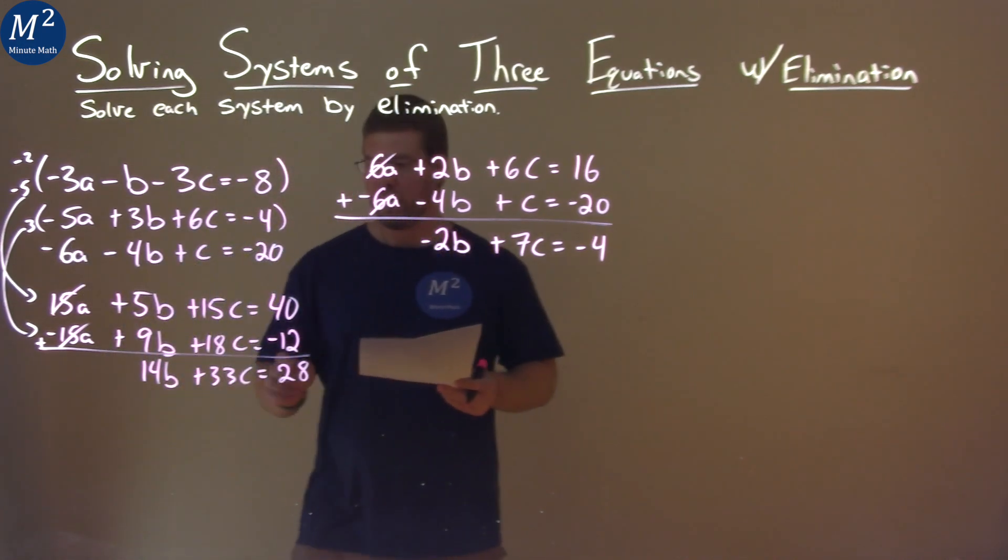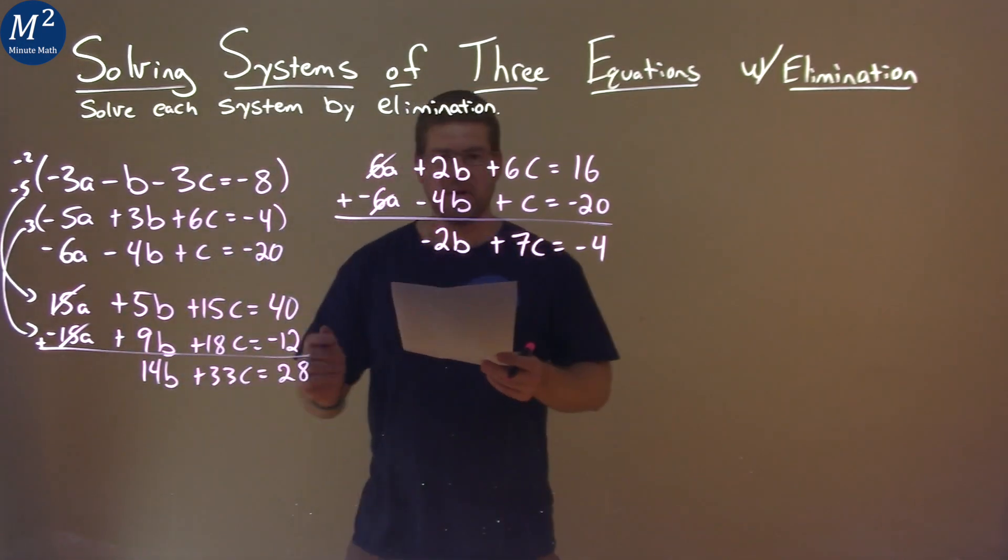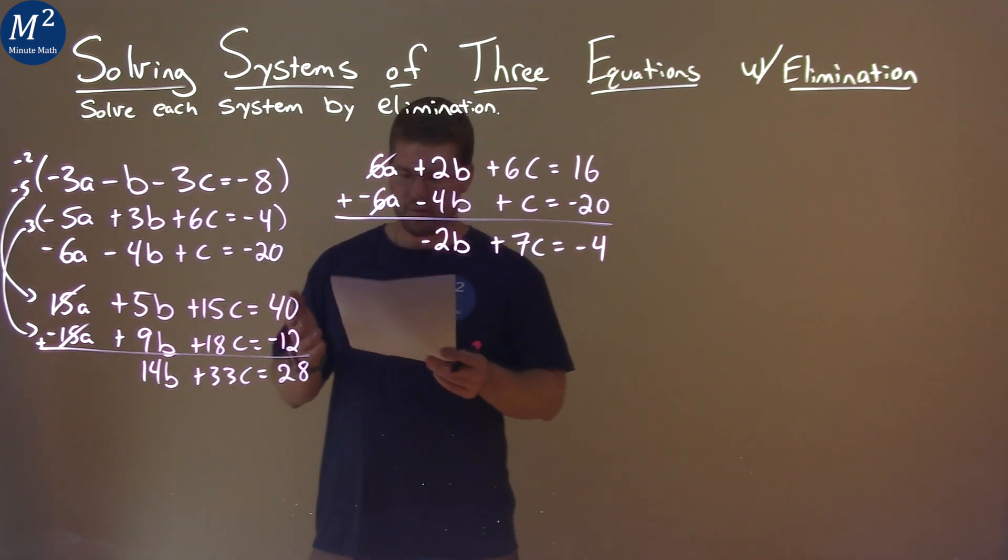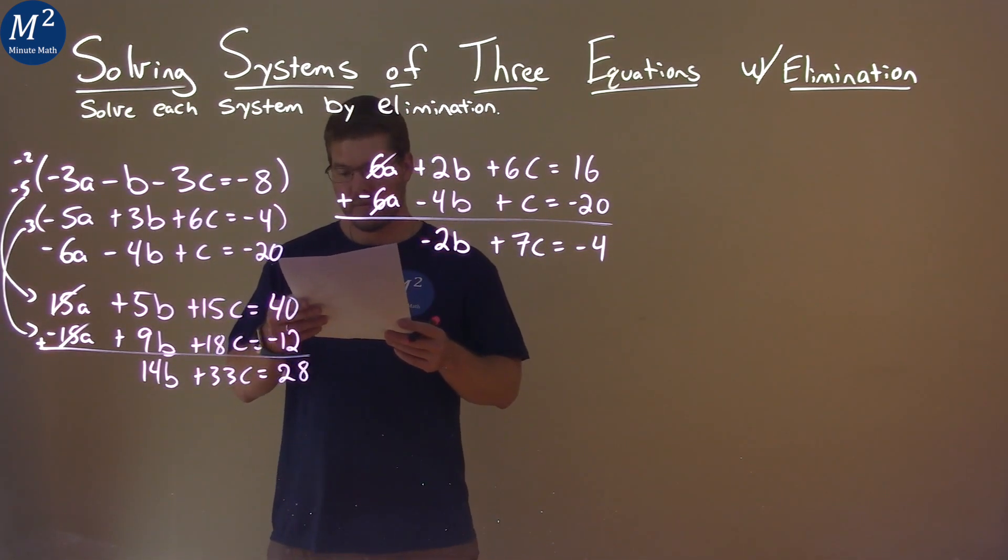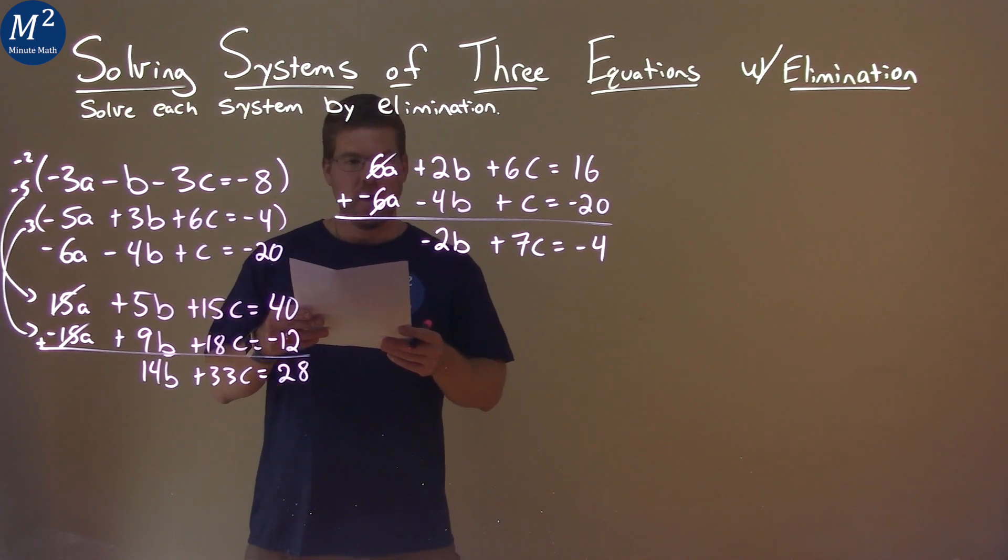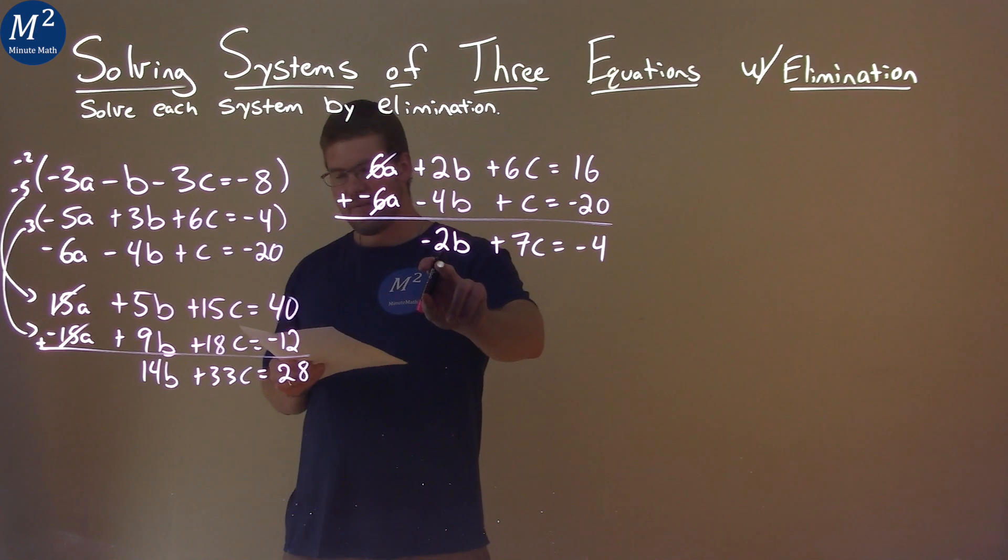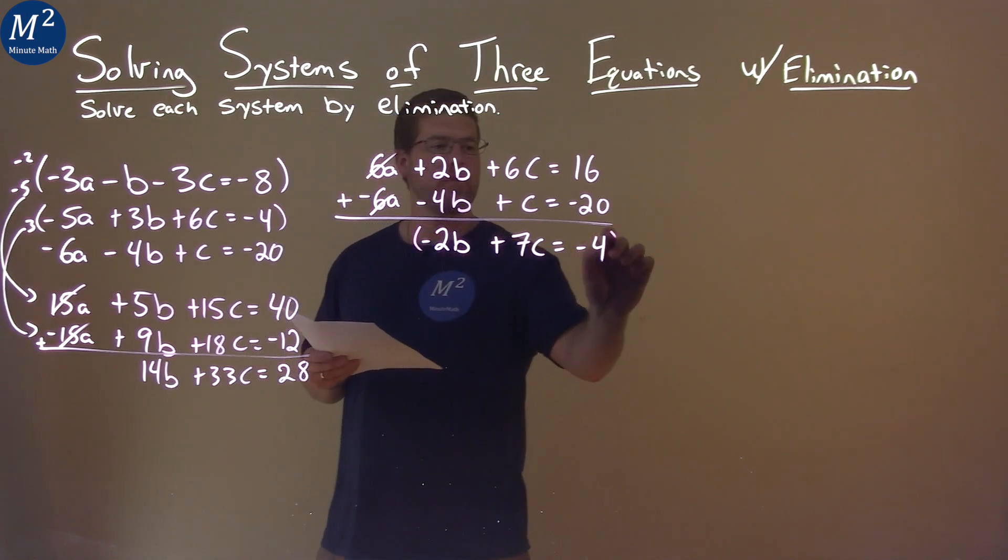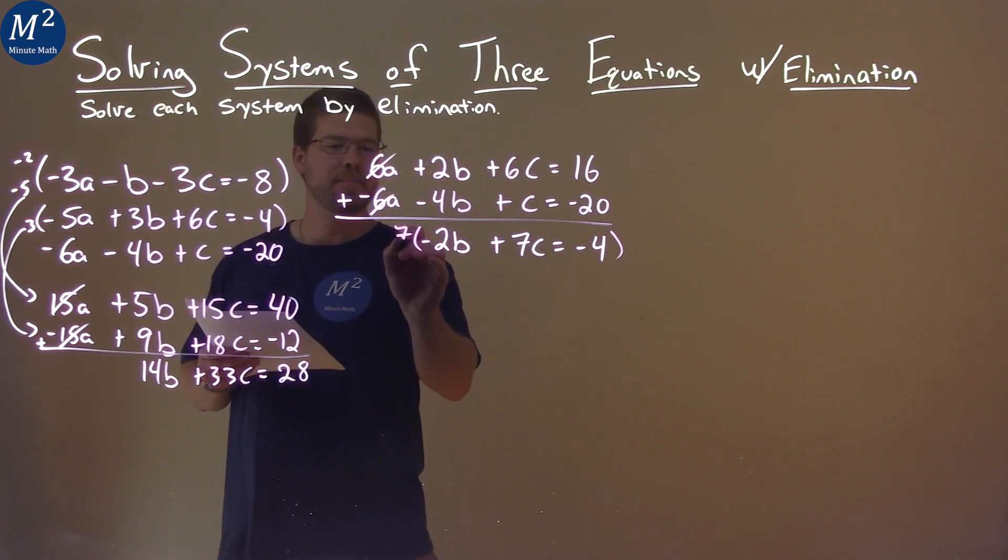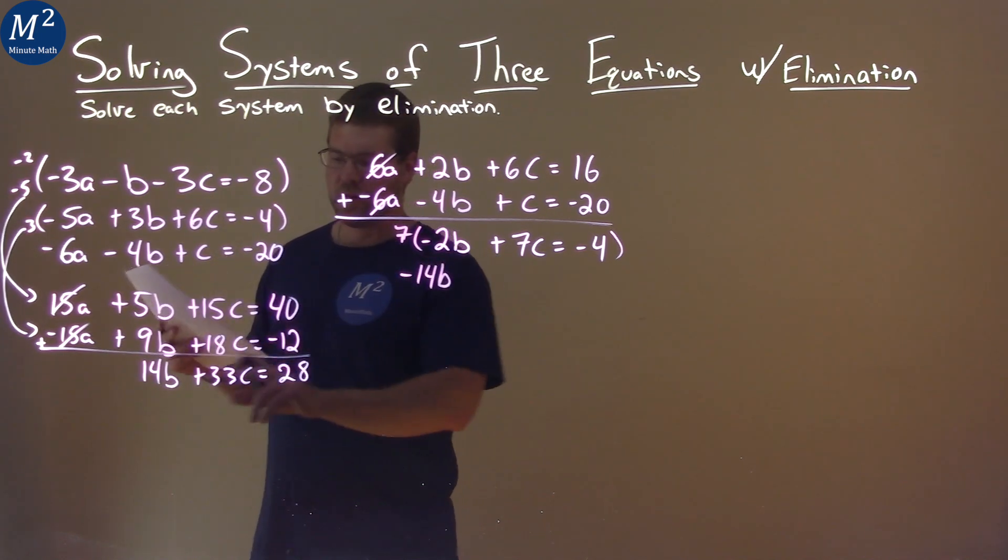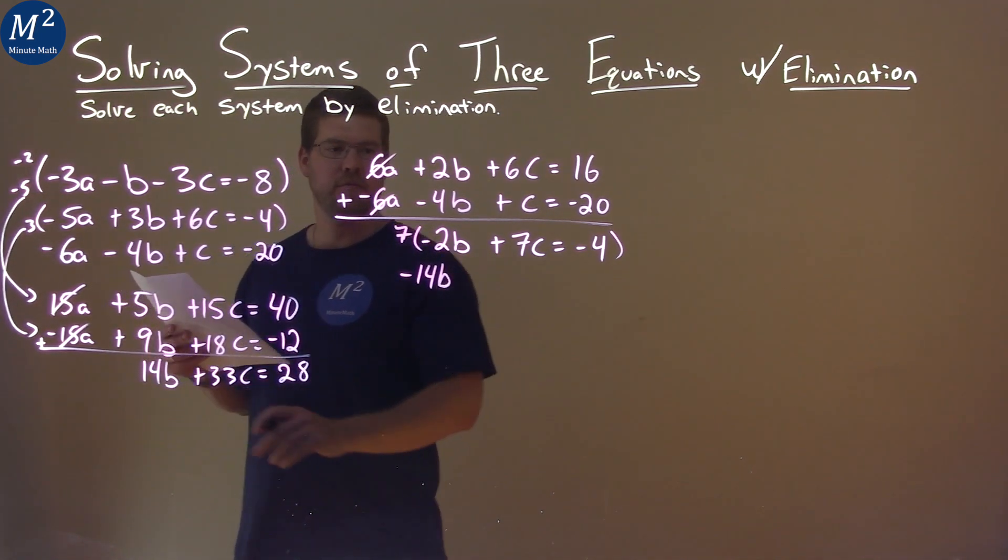Now we have two equations here. They're not exactly the same. We can't really eliminate a variable right off the bat, so we're going to have to multiply something out here. If we multiply this equation by 7, 7 times negative 2b is negative 14b, and that's what I was trying to find the opposite of. We have 14b here.